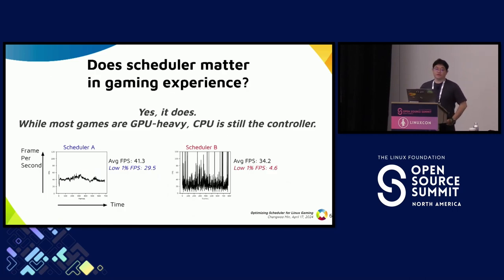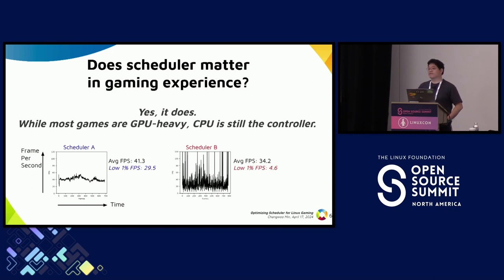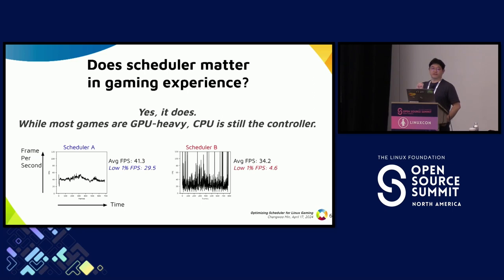When you first tell people that you're optimizing the scheduler to improve Linux gaming experience, the first response is: maybe your approach won't be very successful because games are all GPU-heavy, right? GPU utilization in games is 99%, 95% — all games are GPU-heavy. So if we upgrade the GPU, all problems solved? Maybe not. The problem is that while most games are GPU-heavy, the CPU is still the controller that triggers the GPU job. If the CPU scheduler makes poor scheduling decisions, then the GPU will become underutilized and you're going to see a lot of micro-stuttering issues.